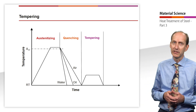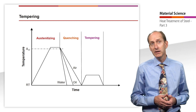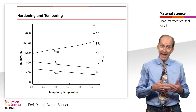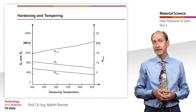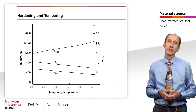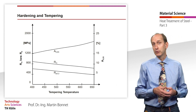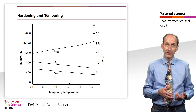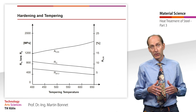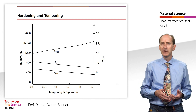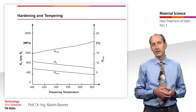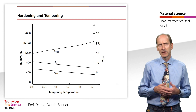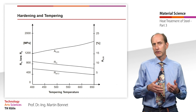A significant increase in toughness can only be observed at temperatures above 400 degrees Celsius. Hardening and tempering is understood to be hardening with subsequent tempering at correspondingly higher temperatures between 400 and 650 degrees Celsius. Hardness and tensile strength are lower than those of hardened steel, but are still significantly higher than those of untreated material. Compared to the hardened material, ductility and toughness increase significantly.